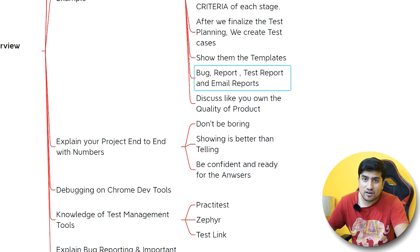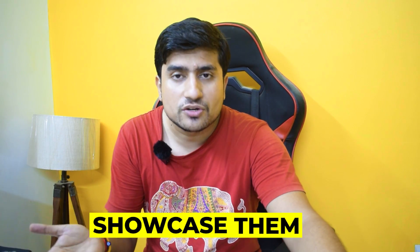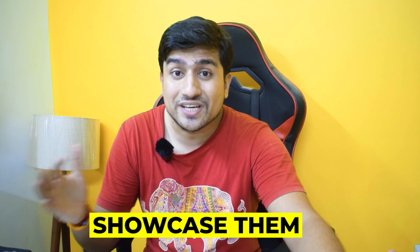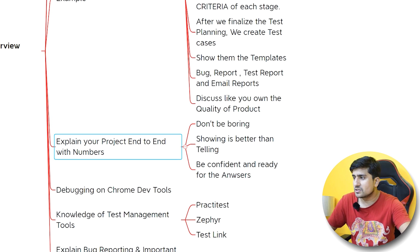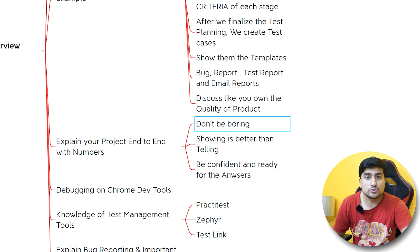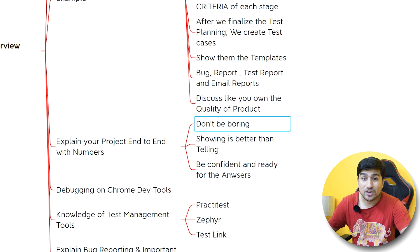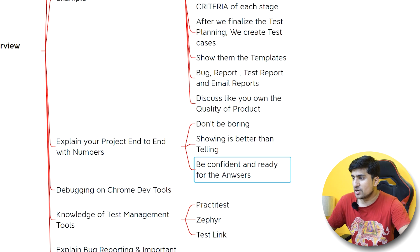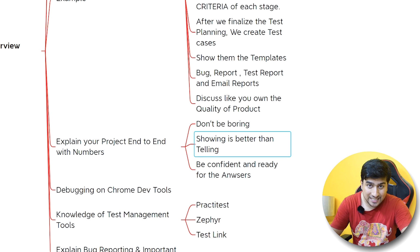Make sure you are ready with these templates when giving the interview. Put them in a folder on your machine so whenever they ask a related question, you can showcase them. Showing is always better than telling. Also, discuss bug reports and test report emails you have sent. If those emails don't contain sensitive information, you can share them with your interviewer. Explain your project with numbers and avoid being boring — be confident.